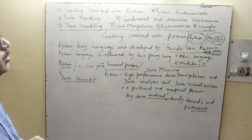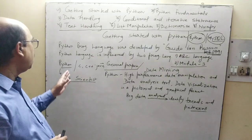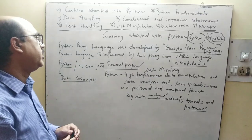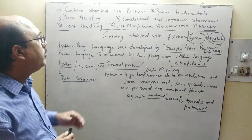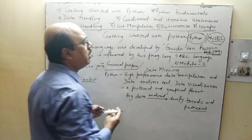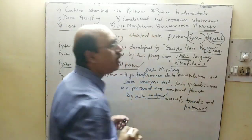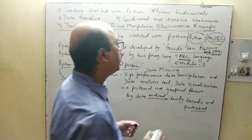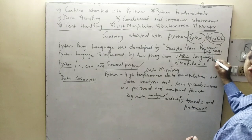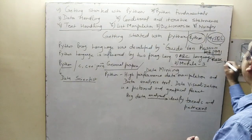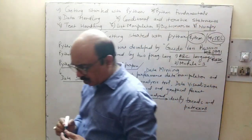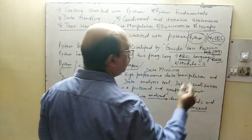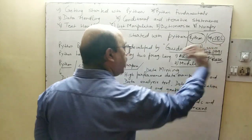Python is different from conventional languages like C, C++, and Java. Python language was influenced by two programming languages. The first is called ABC — ABC is a teaching language, a basic programming language. ABC stands for Beginner's All-purpose Symbolic Instruction Code, so Python is based on this language.